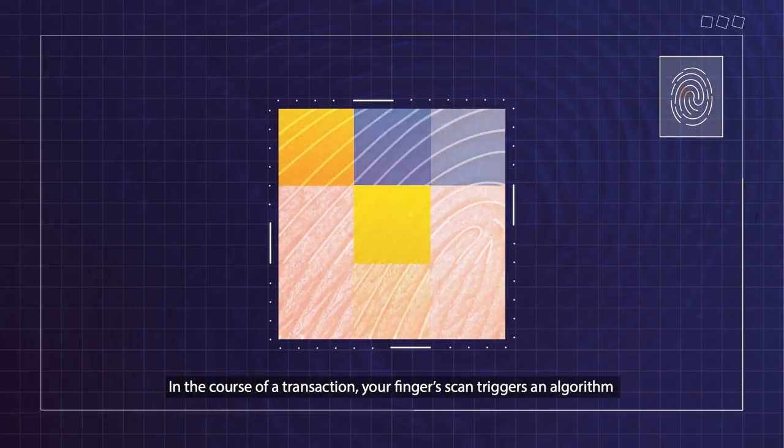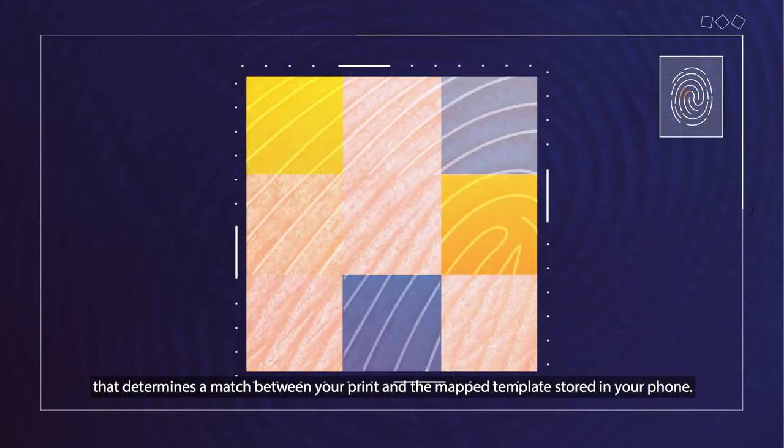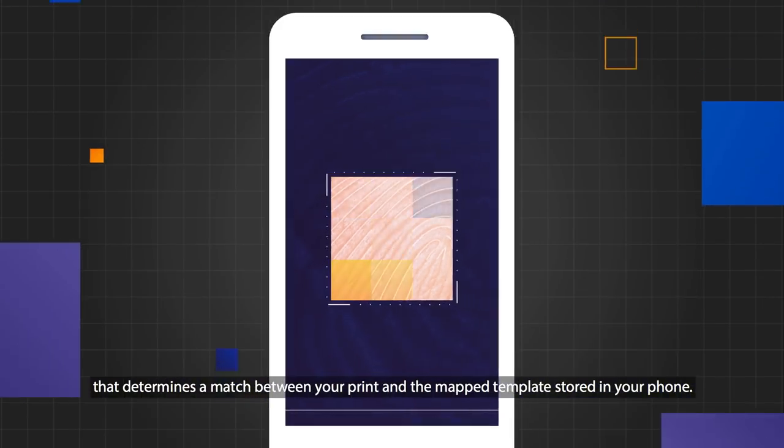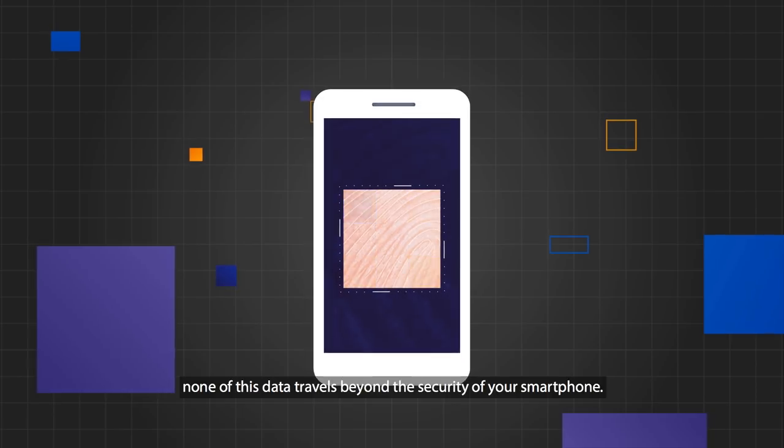In the course of a transaction, your finger scan triggers an algorithm that determines a match between your print and the map template stored in your phone. And good news for your peace of mind, none of this data travels beyond the security of your smartphone.